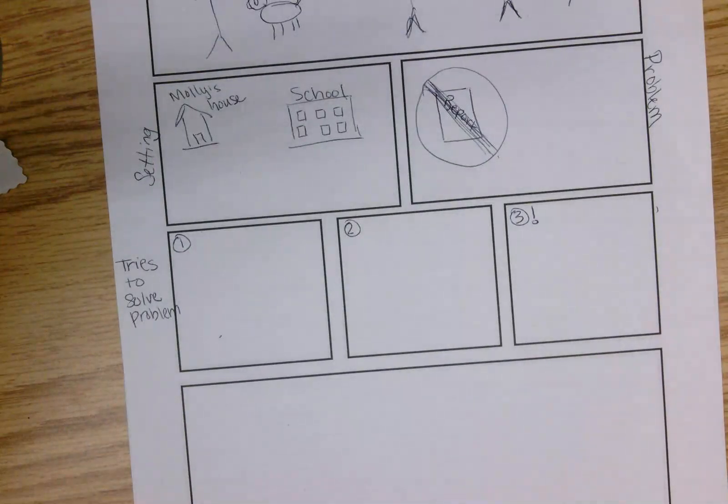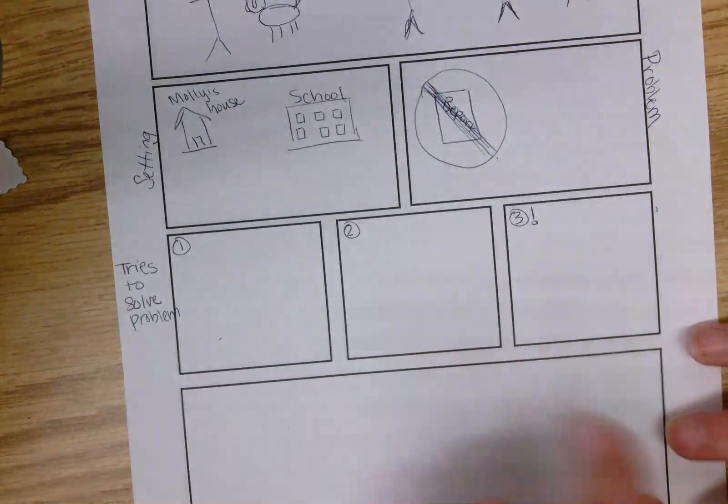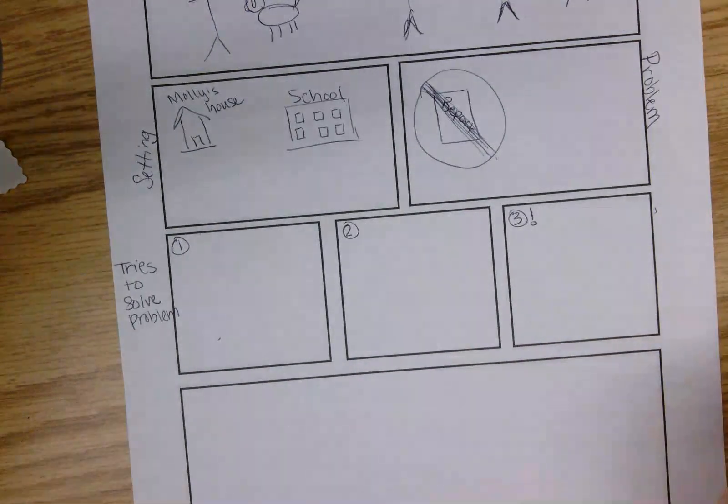It's not always the third attempt that is successful in a story, but for the purpose of ours you need to have at least two attempts that are unsuccessful and one attempt that is successful. That's for our story, that is what you need to do.